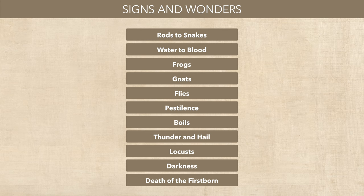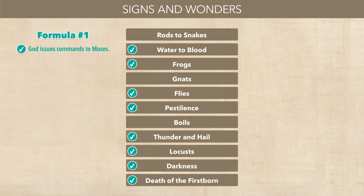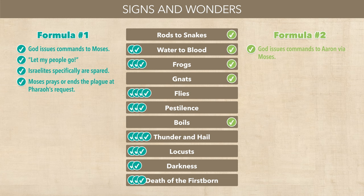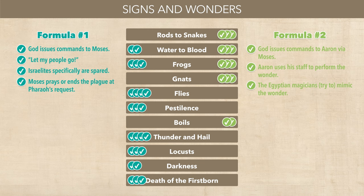Some plagues start with an order directed at Moses by God, featuring the command, 'Let my people go.' The Israelites are specifically spared from the plague, and it ends when Moses prays to God at Pharaoh's request. Other plagues start with instructions from God to Aaron via Moses. The frog and blood plagues feature two commands. Aaron uses his staff to perform the wonder, and the Egyptian magicians are on hand to mimic it, turning the encounter into a duel between opposing miracle workers. In fact, this is one of those classical biblical texts that clearly shows a merger of different sources.